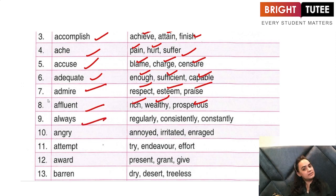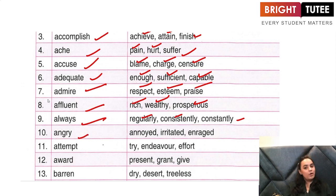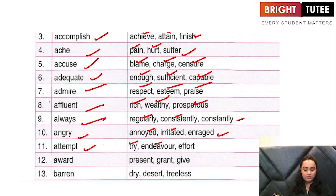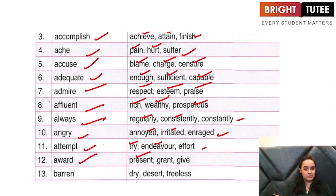'Always' — what are the other words we use for always? Regularly, consistently, or constantly. 'Angry' — the other words for angry: annoyed, irritated, enraged. 'Attempt' — the other words for attempt: try, endeavor, effort. 'Award' — giving an award to somebody means giving a present, giving a grant, or just giving something to someone.